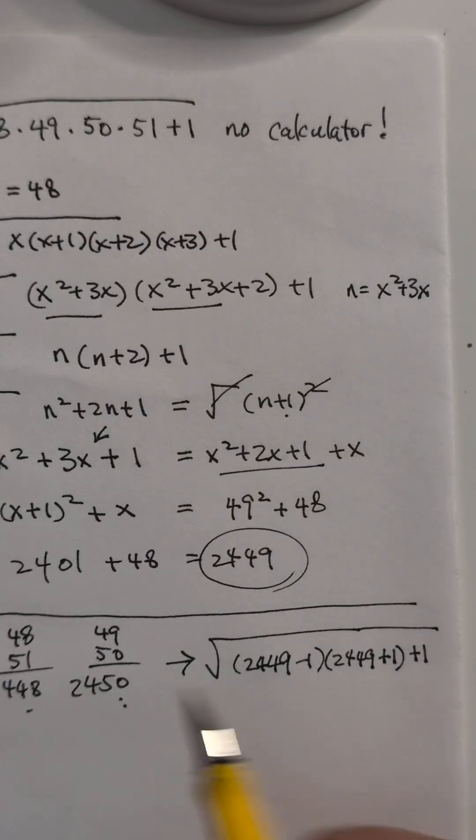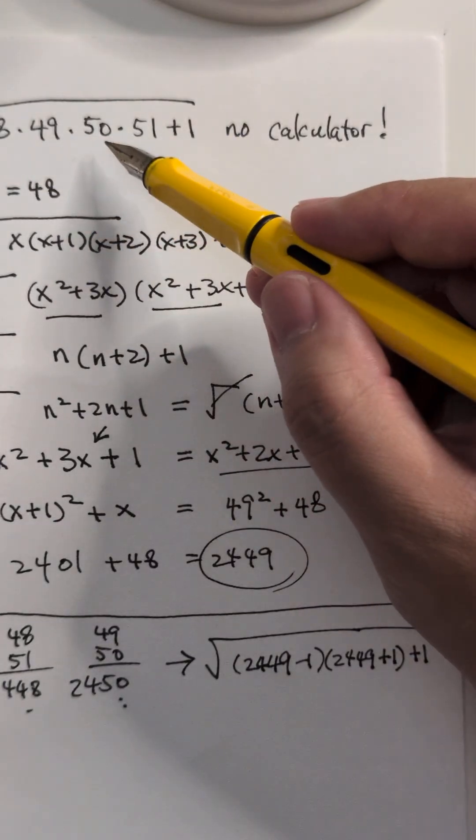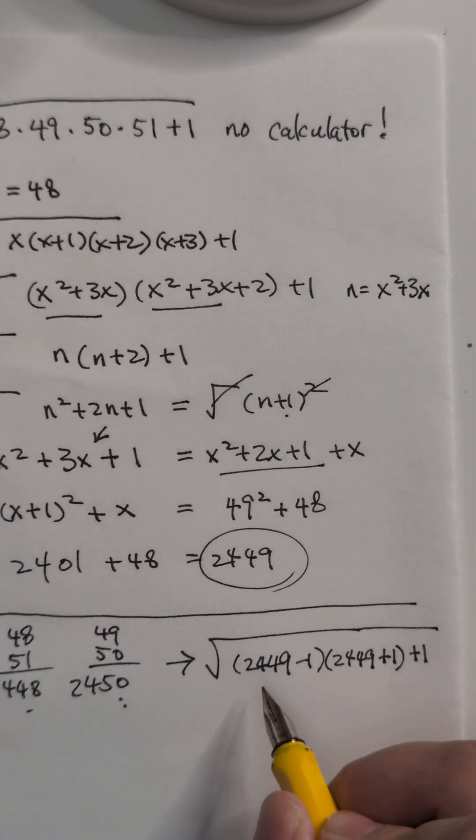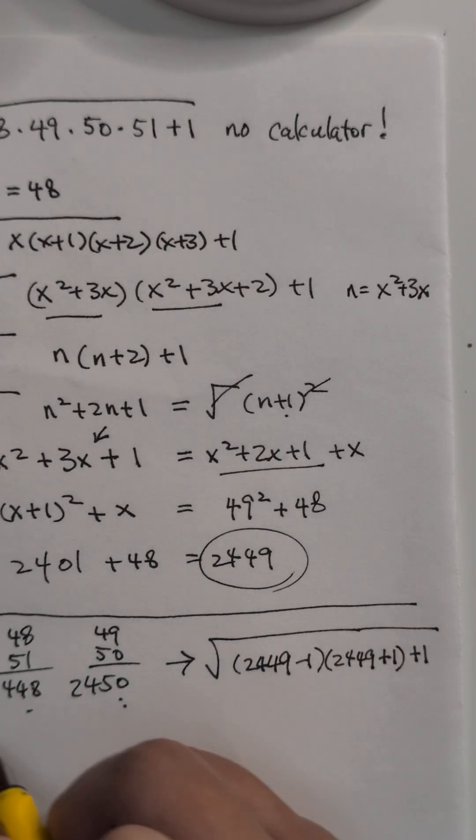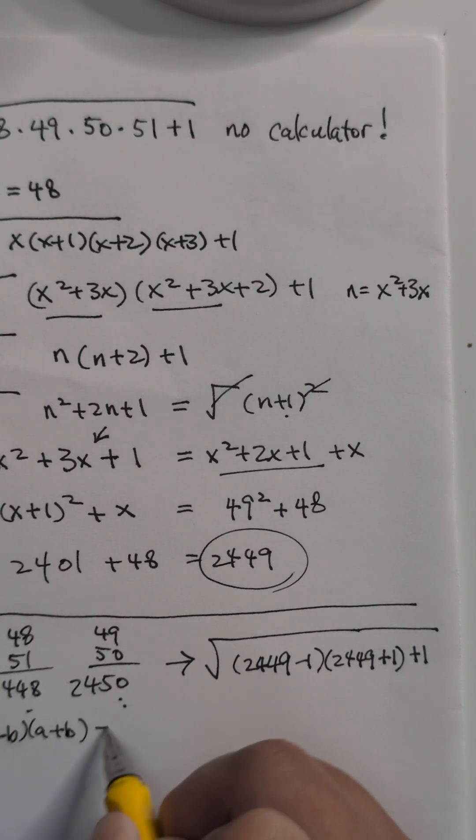So we actually, the first four products, 48 times 49 times 50 times 51, we can simplify it to look like this. And what does this actually give you? Remember, a minus b times a plus b equals a squared minus b squared.